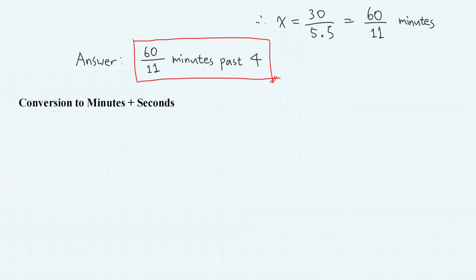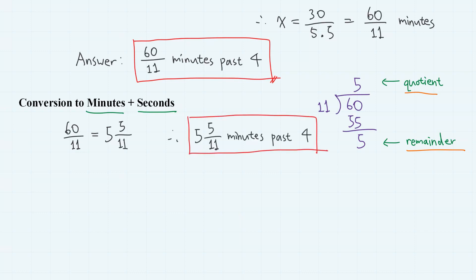Now, some of you might want to convert this into minutes and seconds notation. So I will show you how to do that. Notice that if we divide 60 by 11, we have quotient 5 and remainder 5. So in mixed fraction notation, 60 over 11 equals 5 and 5 over 11. So it is 5 and 5 over 11 minutes past 4.